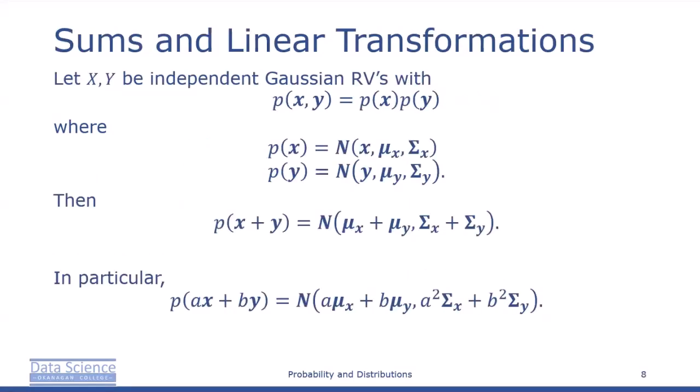If x and y are independent Gaussian random variables — that is, the joint distribution p of x and y equals p of x times p of y, with both normally distributed — then x plus y is also Gaussian distributed, with mean mu x plus mu y and variance sigma x plus sigma y. In particular, the probability of Ax plus By is normally distributed with scaling factors A and B on the mean and scaling factors A squared and B squared on the variance. This property is important when we consider independent, identically distributed Gaussian noise acting on random variables, for example in linear regression.